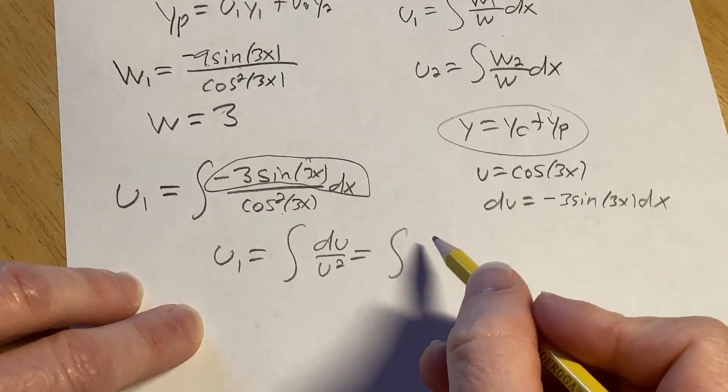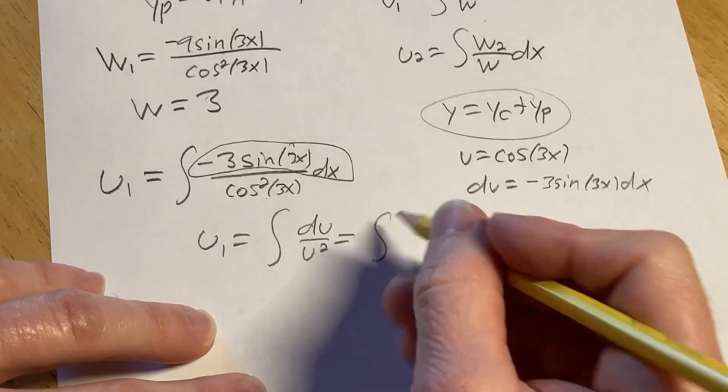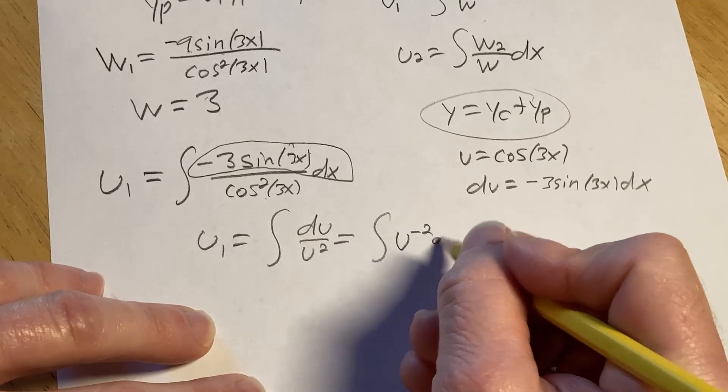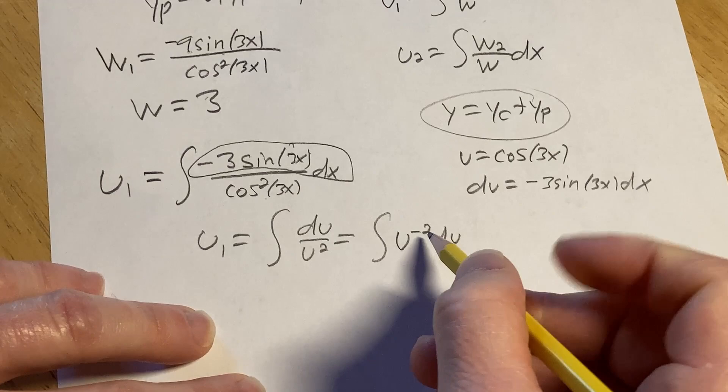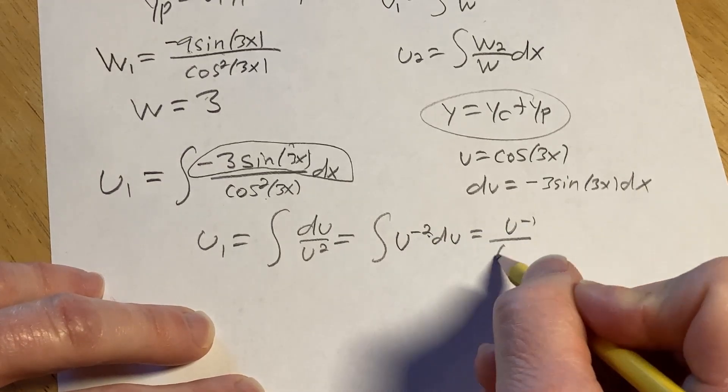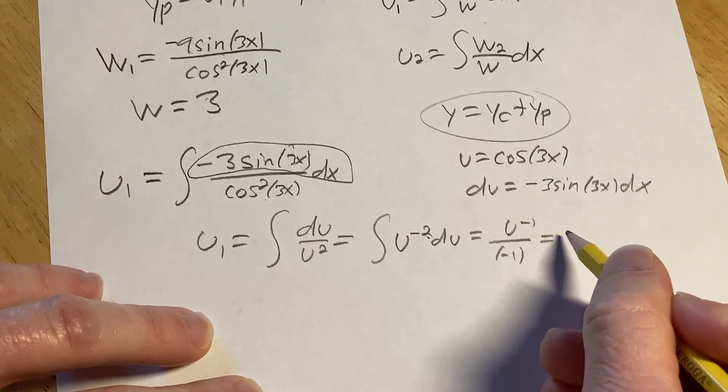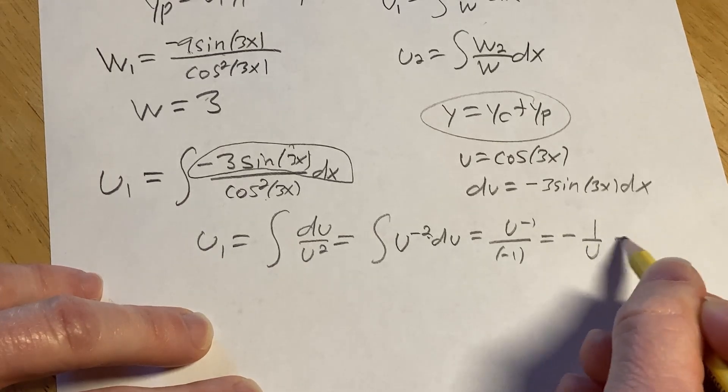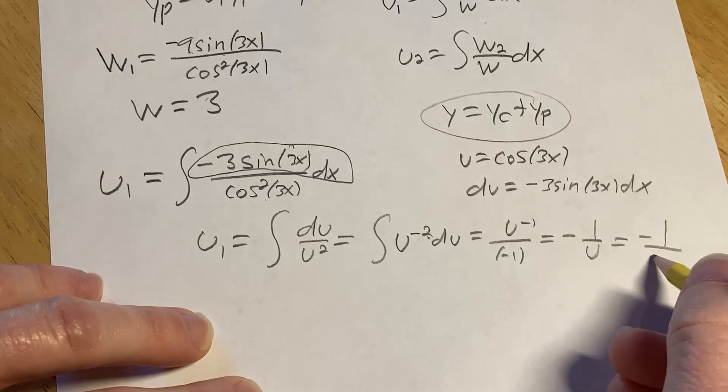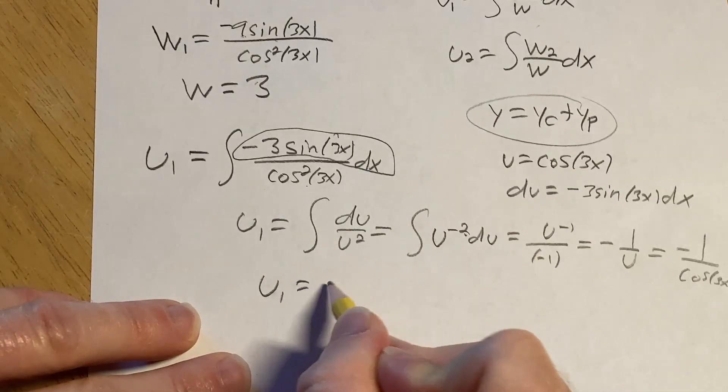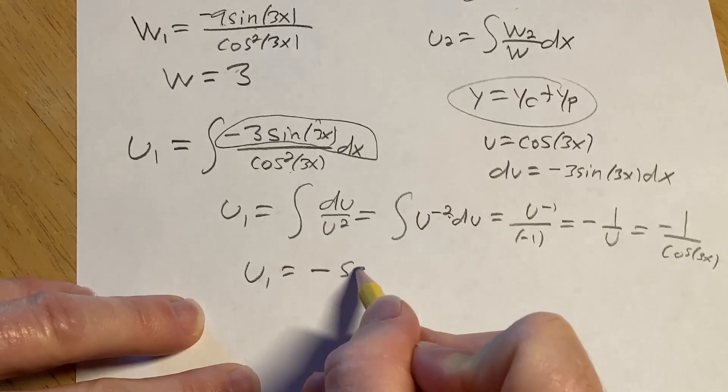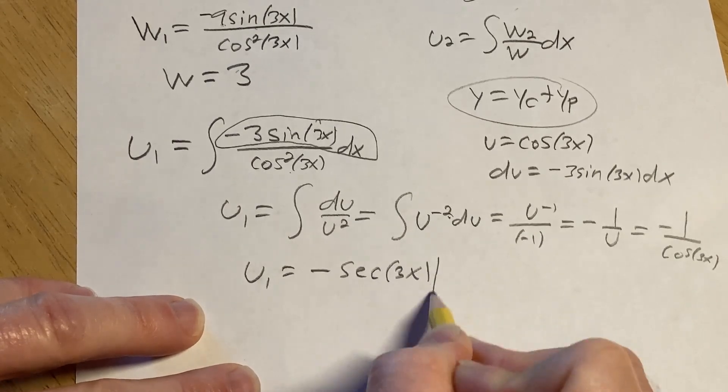So this is going to be u1 equals the integral of du over u squared. You want to write it as something to a power so you can use the power rule. So bring it upstairs. It becomes u to the negative 2 du. Now you apply the power rule. So you add 1 to the exponent and divide. So it's u to the negative 1 over negative 1. It's negative 1 over u. Negative 1 over cosine 3x. So u sub 1 is negative secant of 3x.